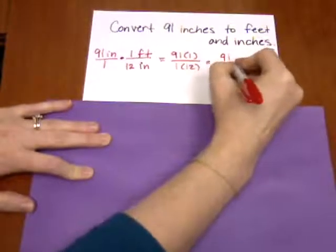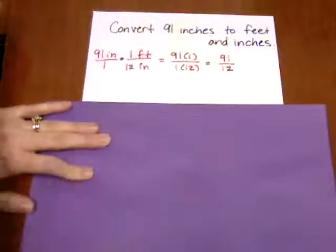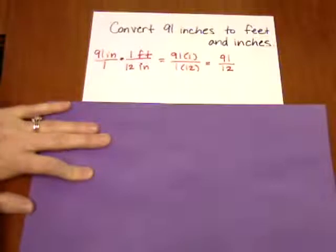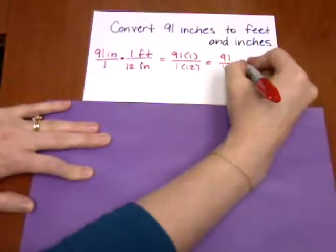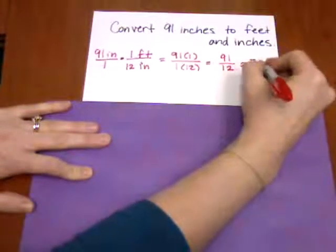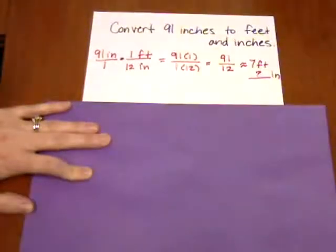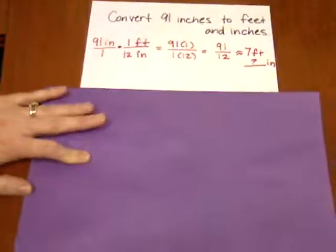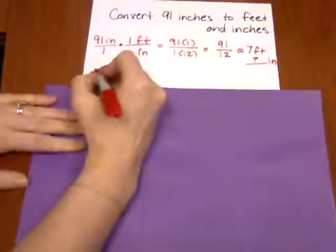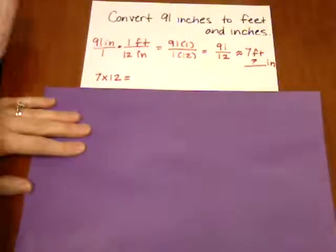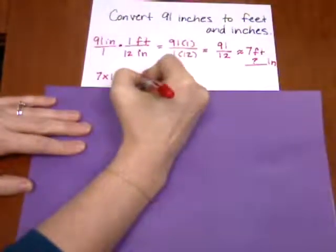Now, what I notice here is that 12 is not going to divide into 91 evenly. It goes in 7 times, but there is some left over. So one thing I can tell you is it's approximately 7 feet and I don't know how many inches. So what I'll do next is I can quickly do 7 times 12. That is 84.